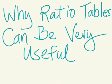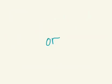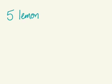Today's lesson is why ratio tables can be very useful, or the lemonade problem. Let's say that Emma is making lemonade. Her recipe is five lemons for every eight cups of water.